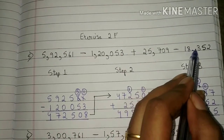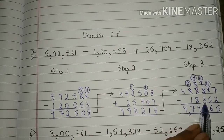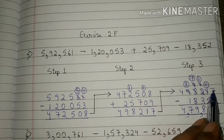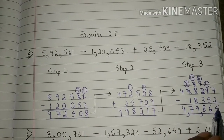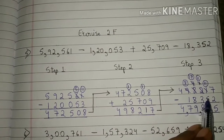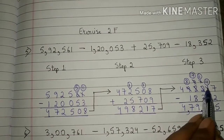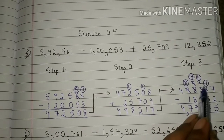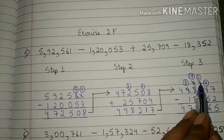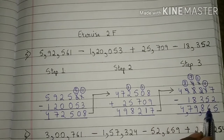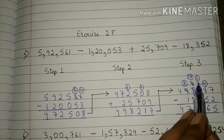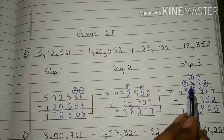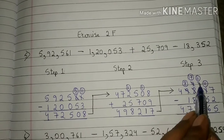We will write 4,98,217 here and after that we will write the fourth number, that is 18,352, here. Now we will subtract the numbers. 7 minus 2 is 5. 1 is smaller than 5, so we will borrow one number from 2. Now 1 will become 11. 11 minus 5 is 6. 1 is smaller than 3, so we will borrow one number from 8.